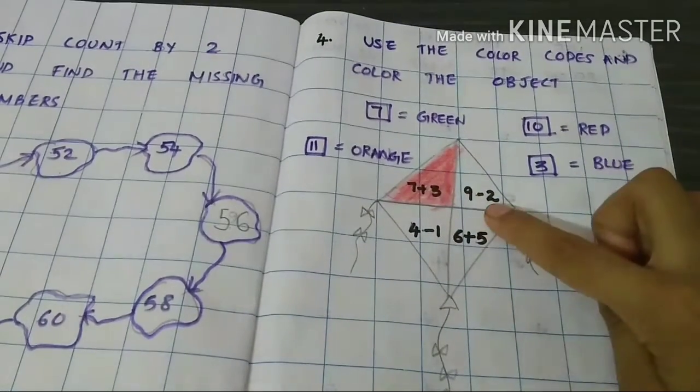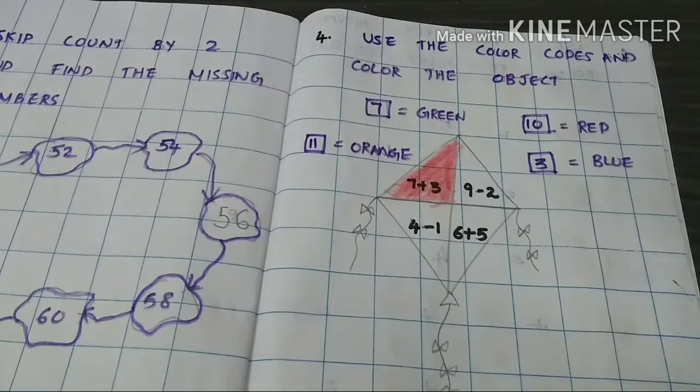9 minus 2, 8, 7. So we have to color green.